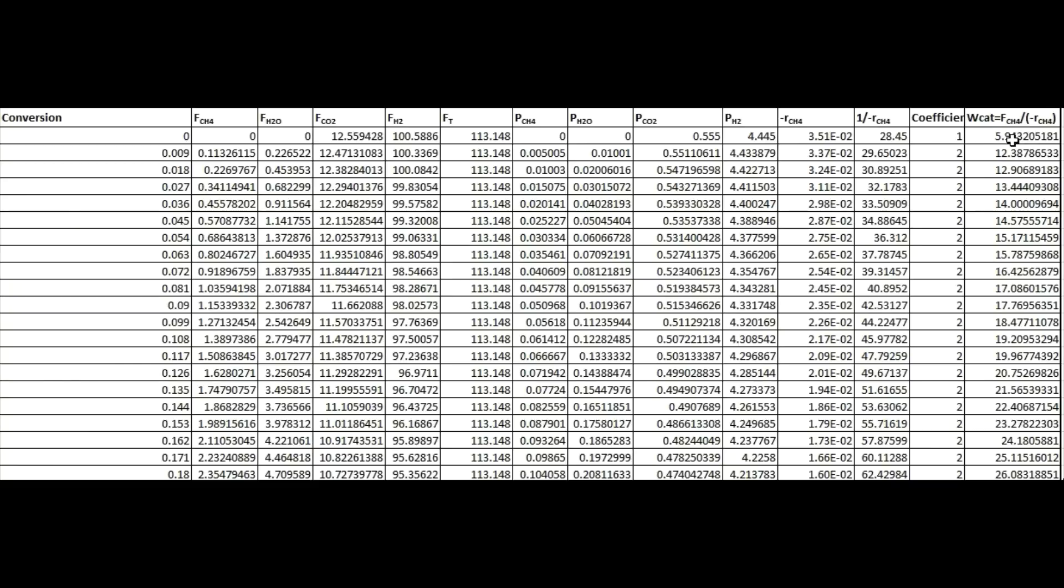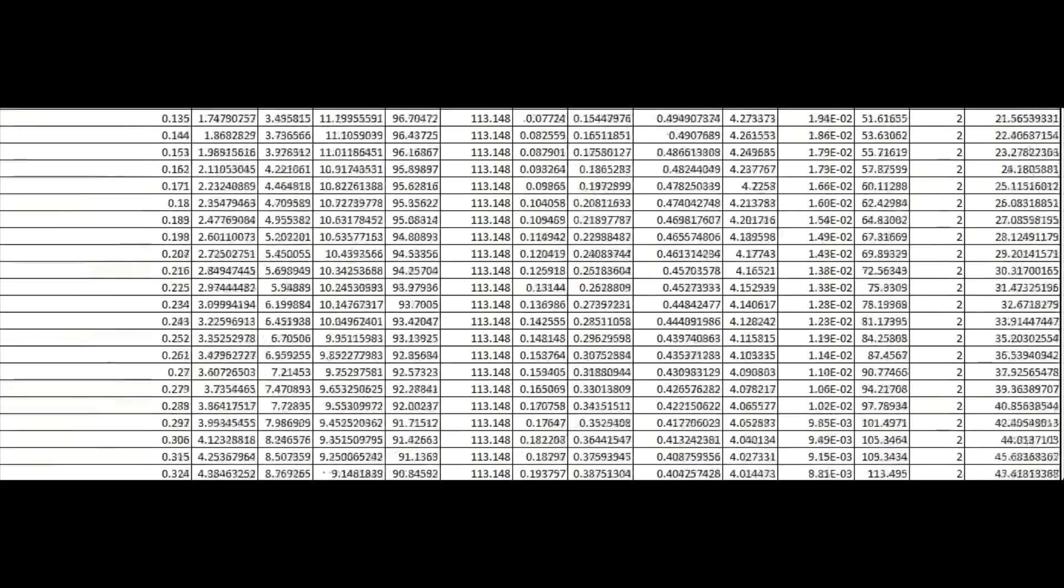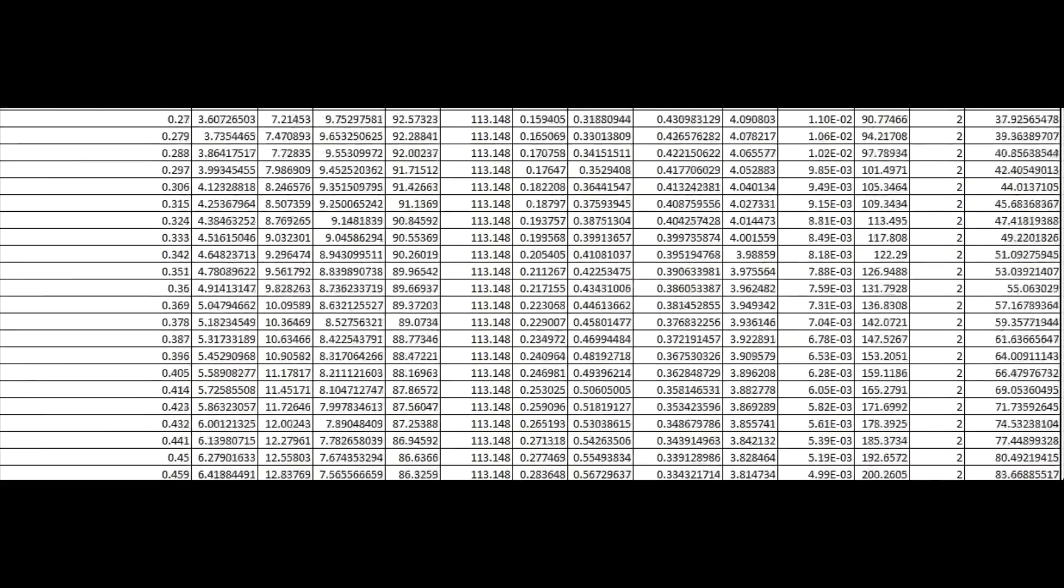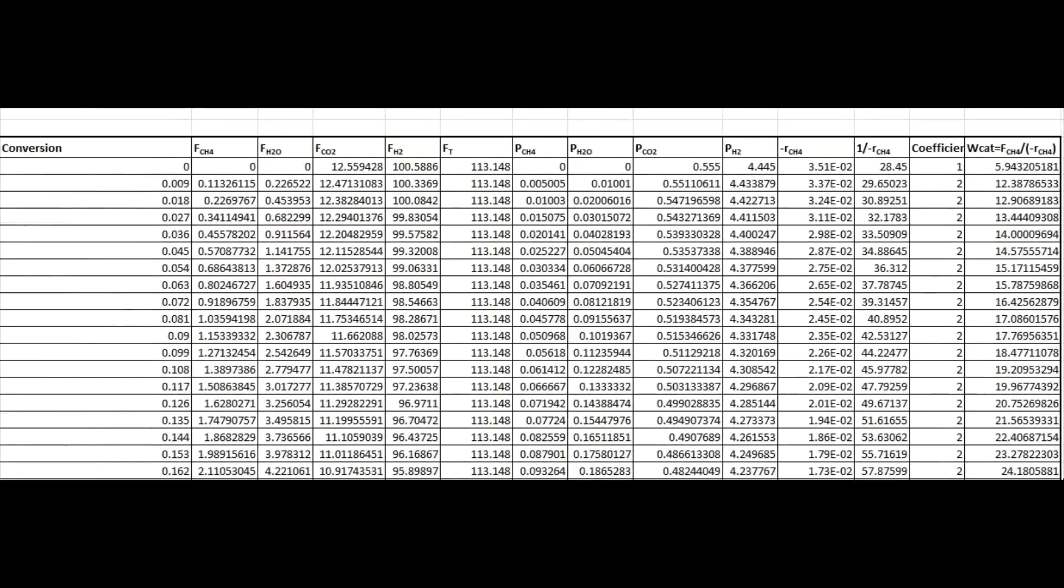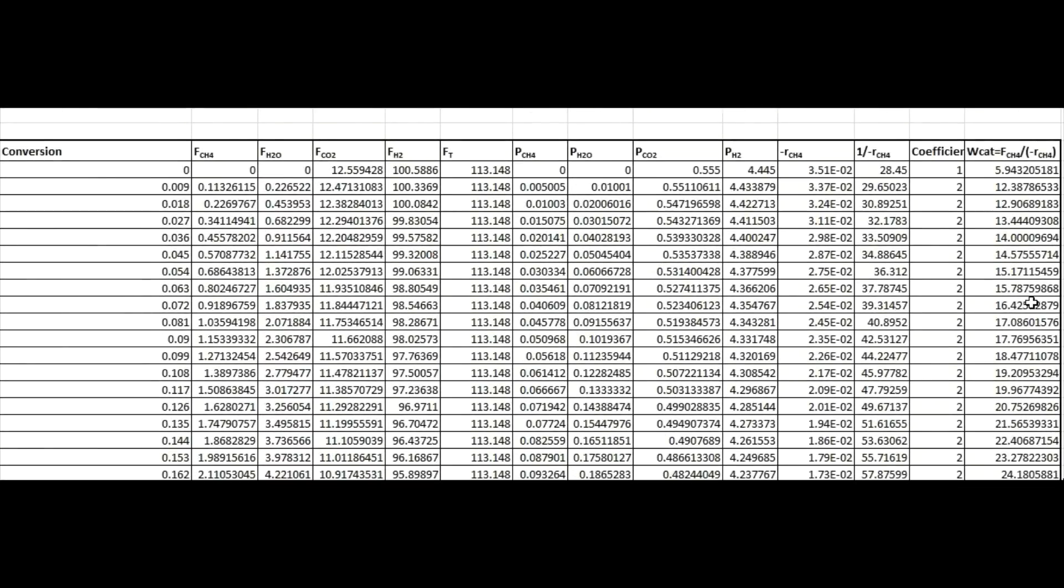And then we can take inverse and multiply it with the coefficient for the trapezoidal rule. And then we can determine this weight of catalyst required for small conversion. So after we are done with this, we can complete it for a given conversion like 90% here. And then we can add all of these small portions of the catalyst to get the total amount of the catalyst required.